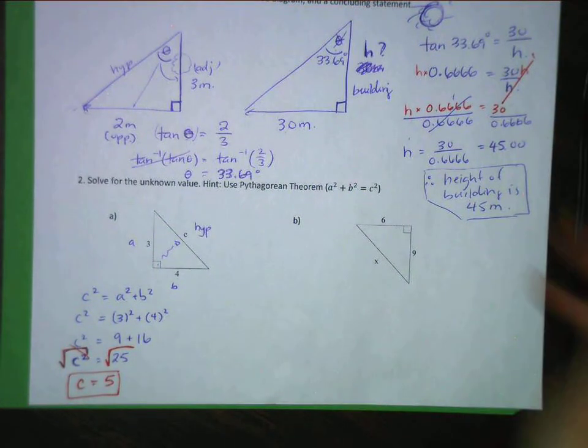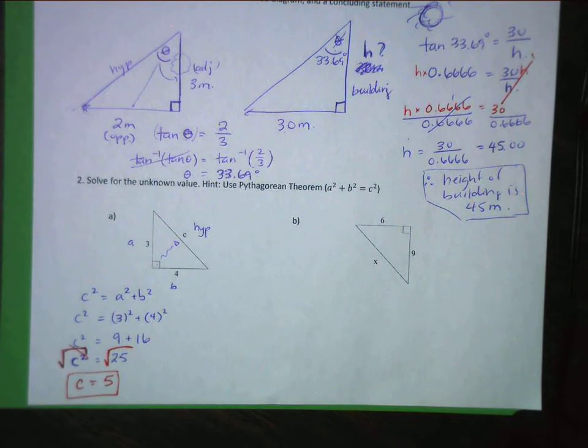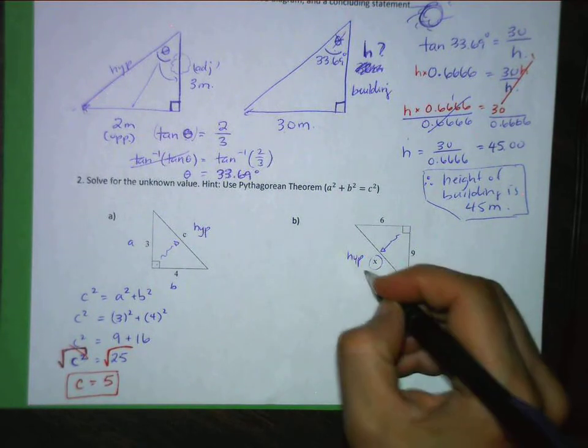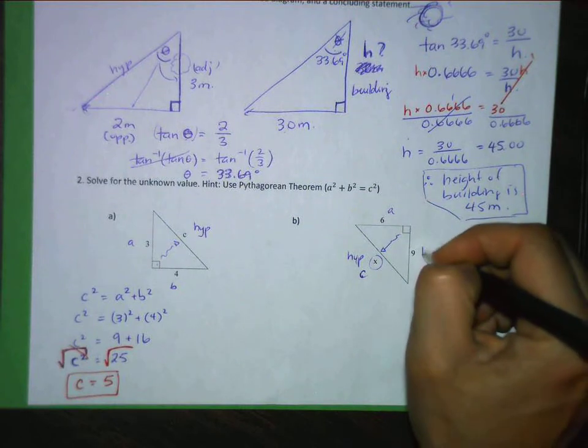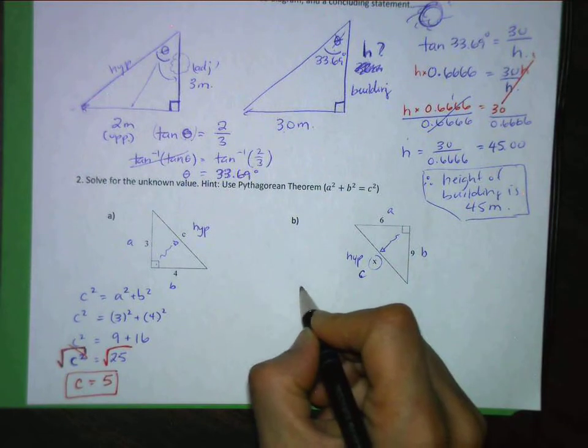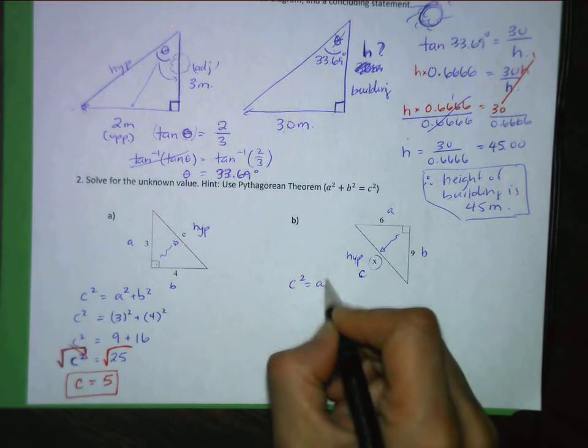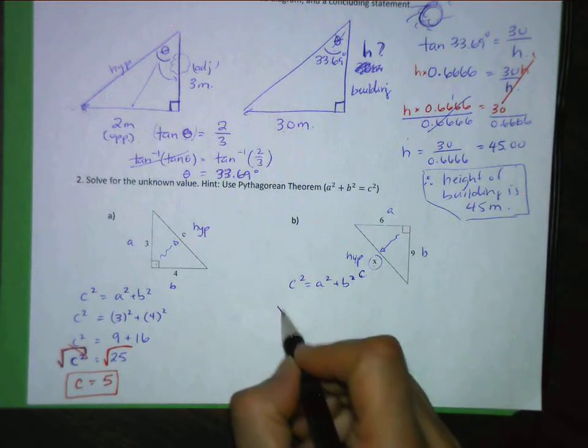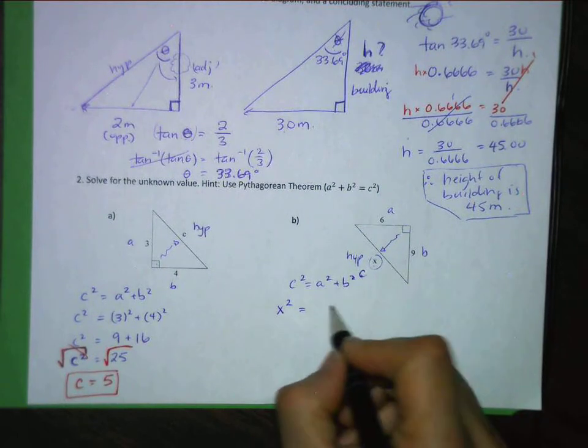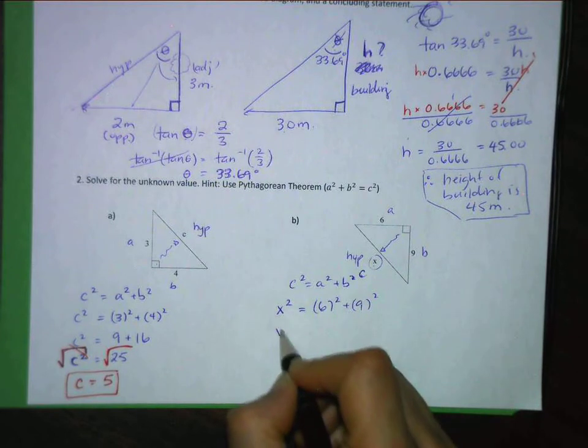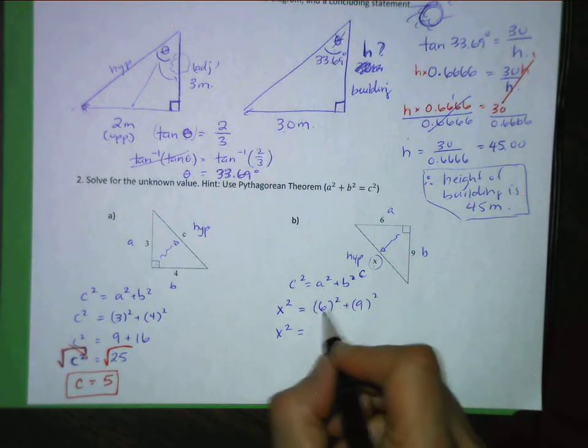Alright, so I'm going to take a look here. There's X. That is across from the 90 degree. So that's the hypotenuse. So I know that's C. This could be A. This could be B. It doesn't matter if you mix those up. It does not matter. Okay, so C squared equals A squared plus B squared. Let's substitute our values. In this case, I'll just put an X for the C squared. Then I have 6 squared plus 9 squared. Write down the X squared. 6 times 6 is 36. 9 times 9 is 81.